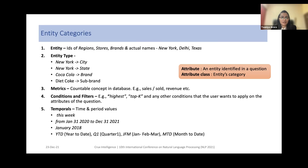The fourth category is conditions and filters — for example, terms like 'highest,' 'top K,' or any other conditions the user wants to apply on attributes. 'Temporal' refers to any time and period values — for example, 'this week,' 'from Jan 31, 2020 to December 31, 2021,' or 'Jan 2018.' It can also include business-specific abbreviations like YTD (year to date), Q1, and GFM.